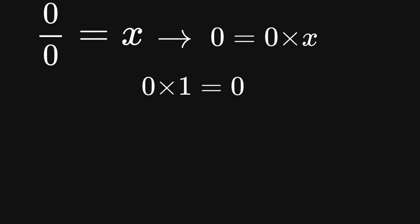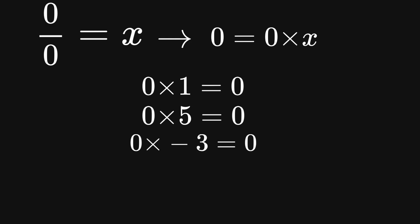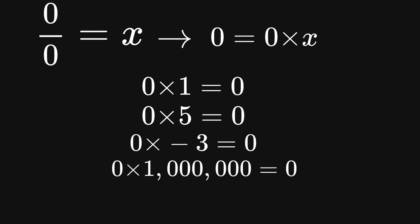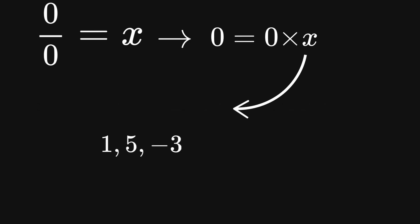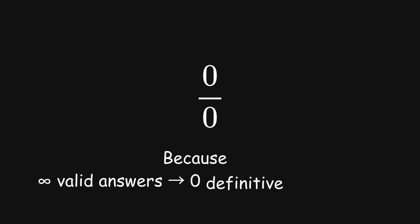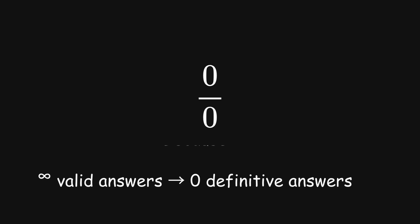Any number works. 0 times 1 equals 0. 0 times 5 equals 0. 0 times negative 3 equals 0. Even 0 times a million equals 0. This means x could be literally any real number — 1, 5, negative 3, a million, or even pi. They all satisfy our equation perfectly. And that's exactly why 0 divided by 0 is called an indeterminacy in mathematics — we can't pin down a single answer because infinitely many answers work equally well.